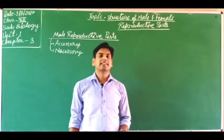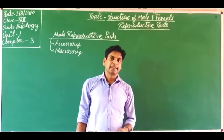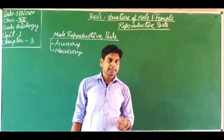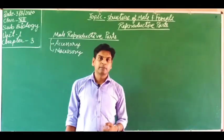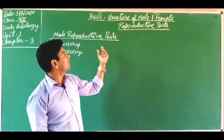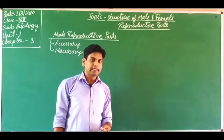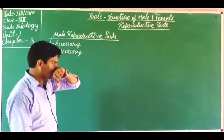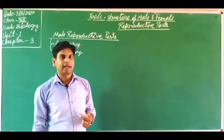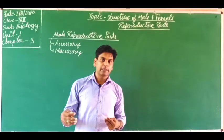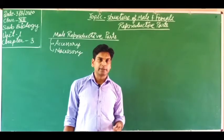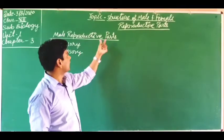Hello, dear students, welcome to this video. This is the first lecture of chapter number three: Reproduction in Human Beings. We will discuss human reproduction in this chapter. The first topic we are going to discuss is the structure of male and female reproductive parts. Any body of an organism has two types of parts: the vegetative part and the reproductive part.